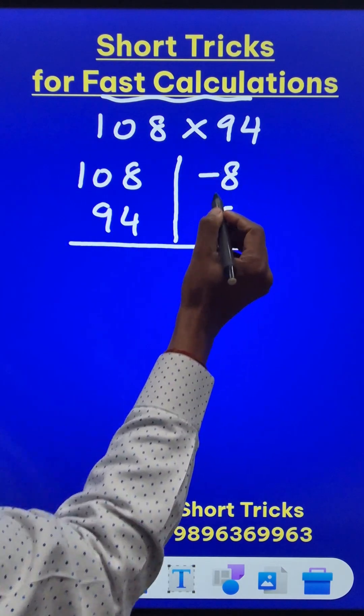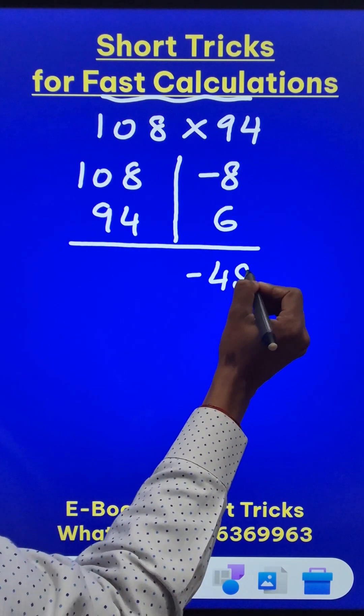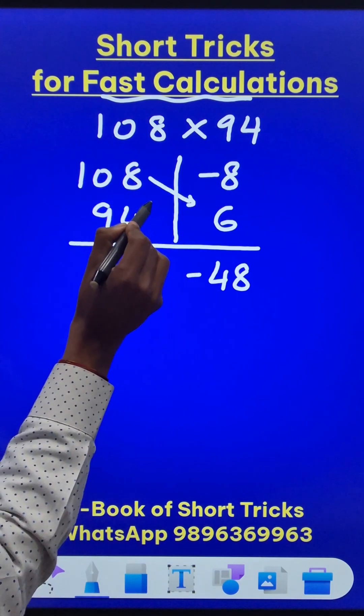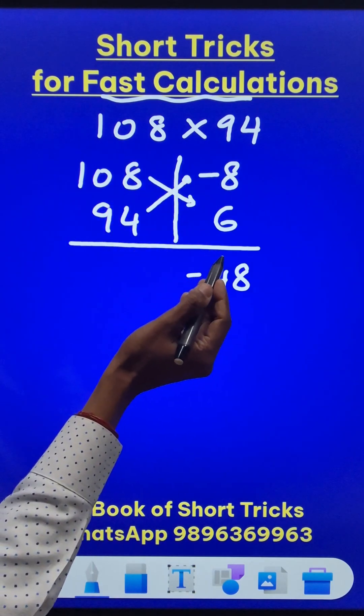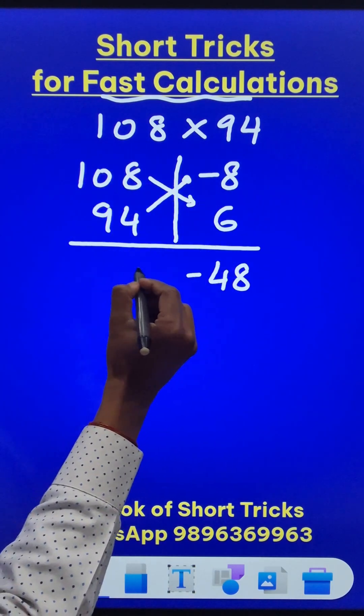When you multiply these two, you get negative 48. And now subtract like this or subtract like this. You are going to get the same quantity. 108 minus 6 is 102.